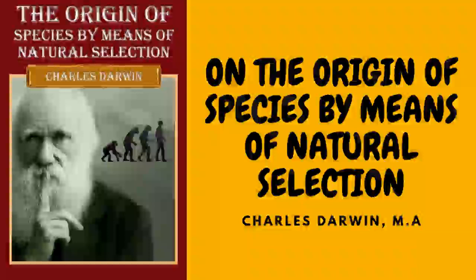Even in the case of the domestic dogs of the whole world, which I fully admit have probably descended from several wild species, I cannot doubt that there has been an immense amount of inherited variation. Who can believe that animals closely resembling the Italian greyhound, the bloodhound, the bulldog, or Blenheim spaniel, so unlike all wild Canidae, ever existed freely in a state of nature? It has often been loosely said that all our races of dogs have been produced by the crossing of a few aboriginal species; but by crossing we can get only forms in some degree intermediate between their parents, and if we account for our several domestic races by this process, we must admit the former existence of the most extreme forms in the wild state.